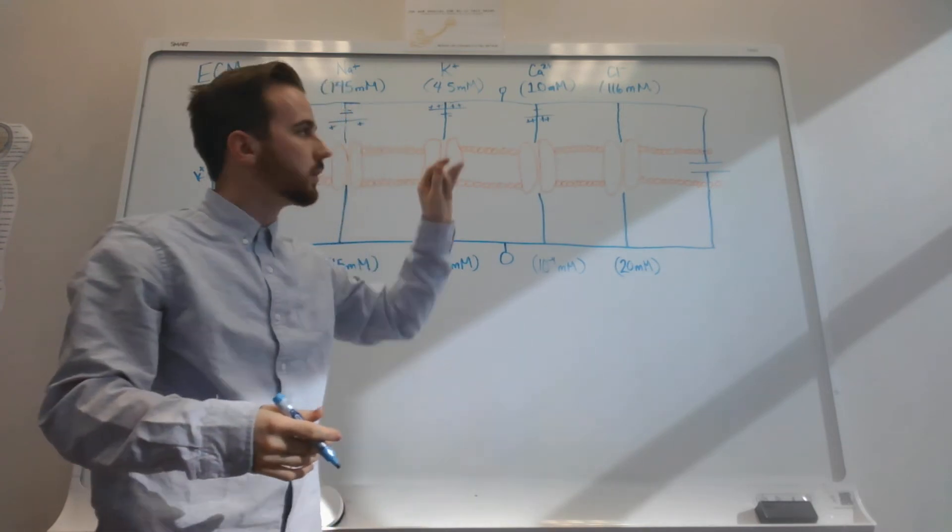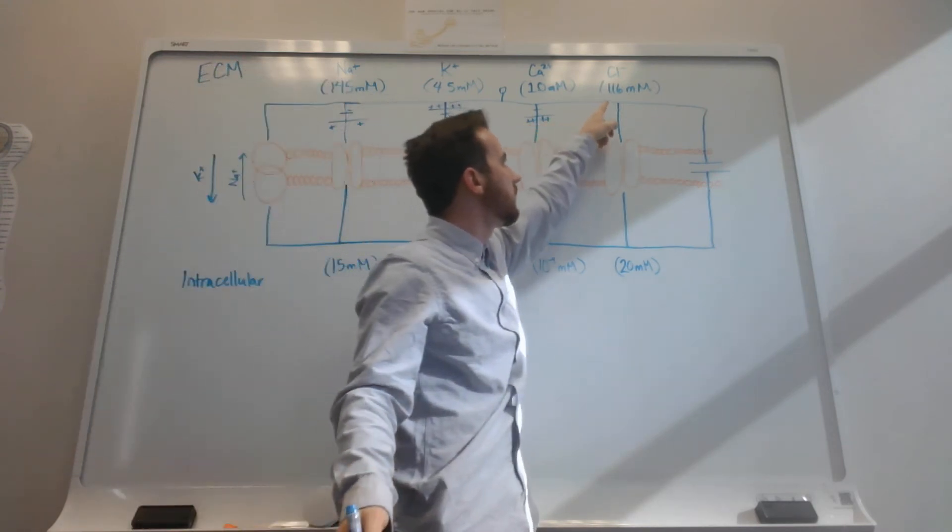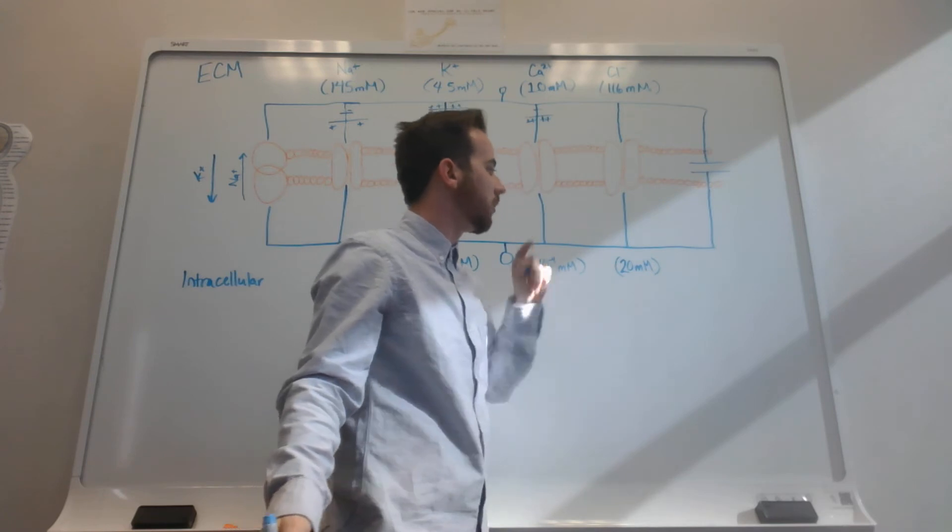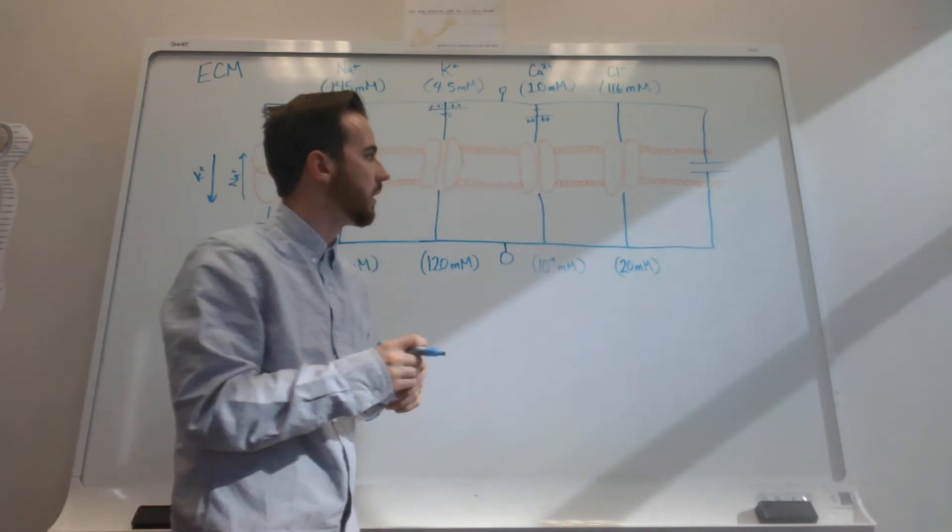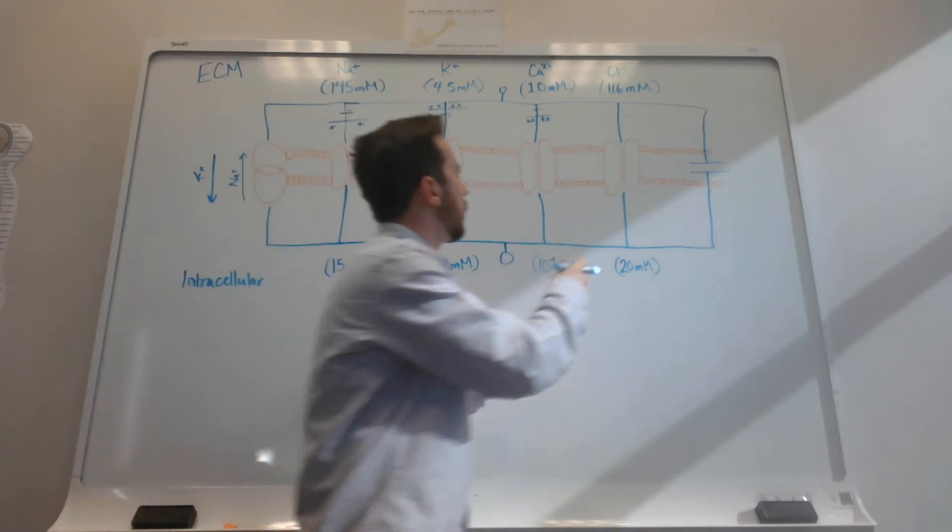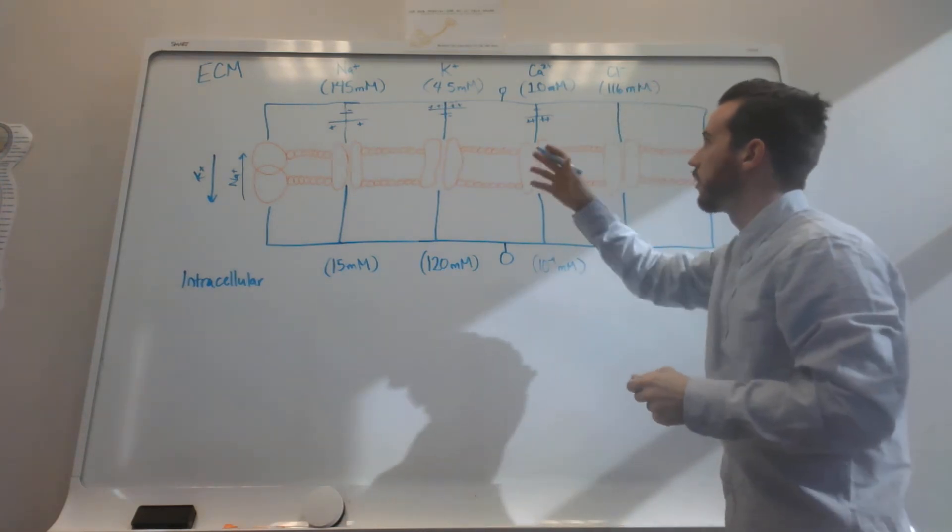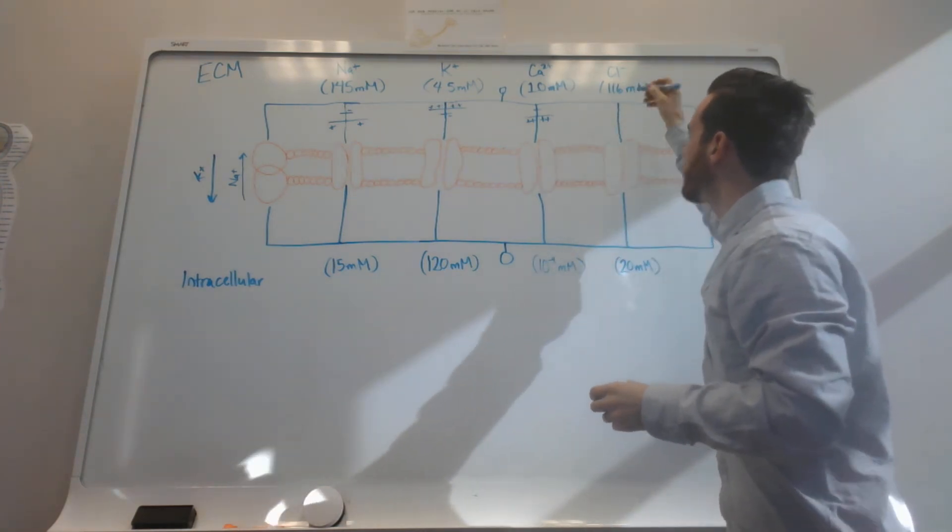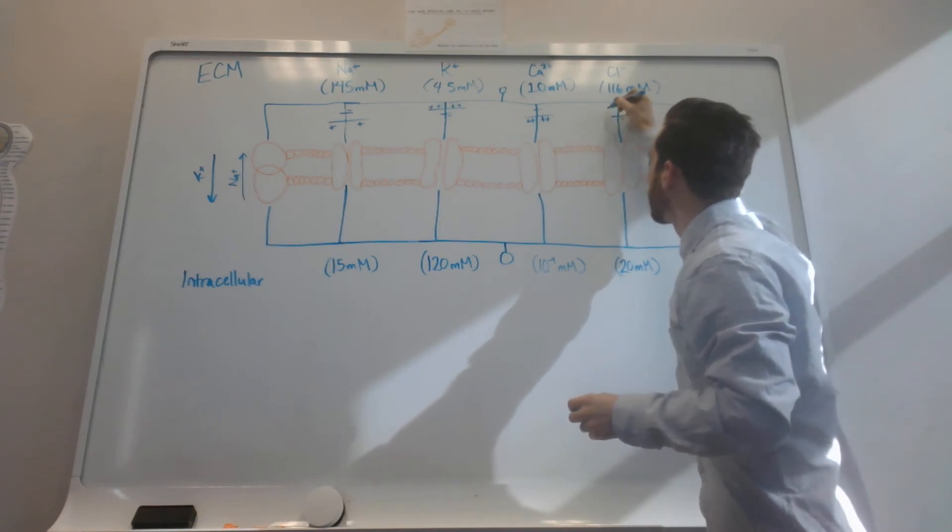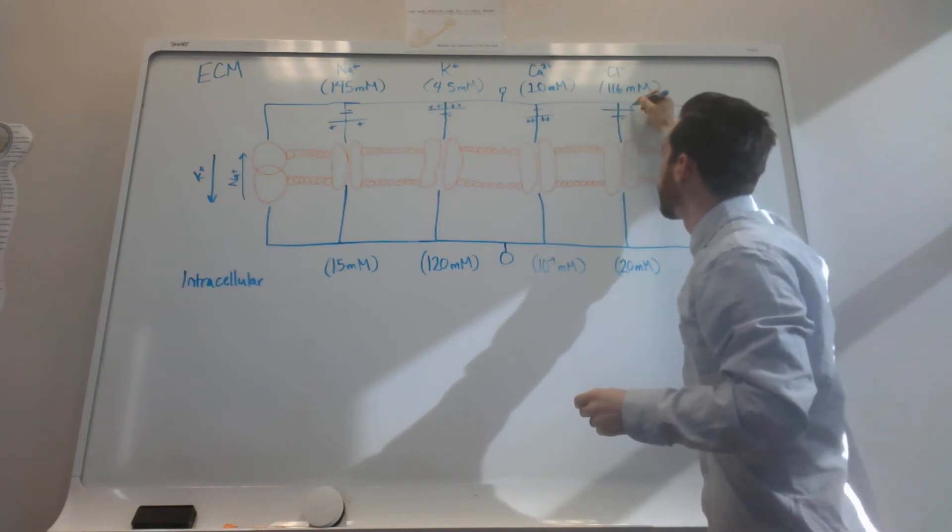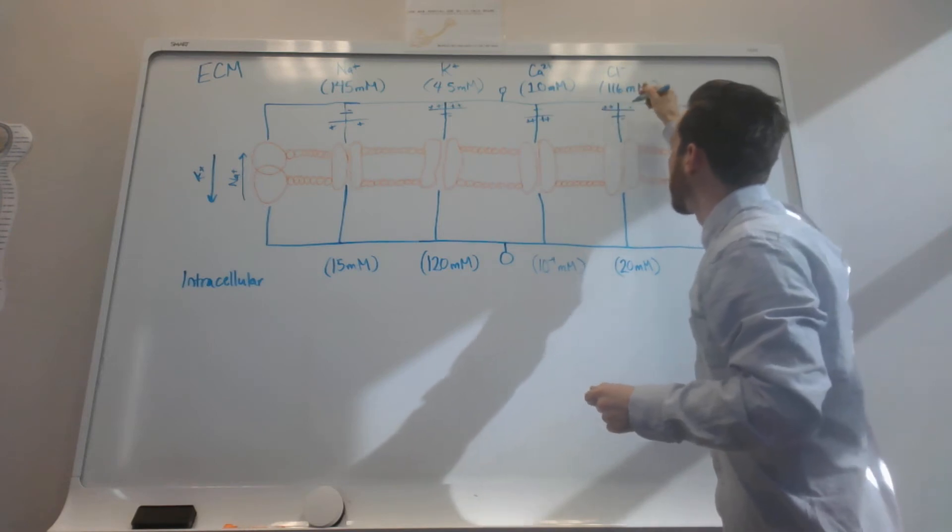And then we have our chloride. Chloride has 116 millimolars outside the cell and 20 millimolars inside the cell. So this is actually going to want to go into the cell like sodium and like calcium. But because it's negatively charged, we represent a negative charge going into the cell, positive charge being outside.